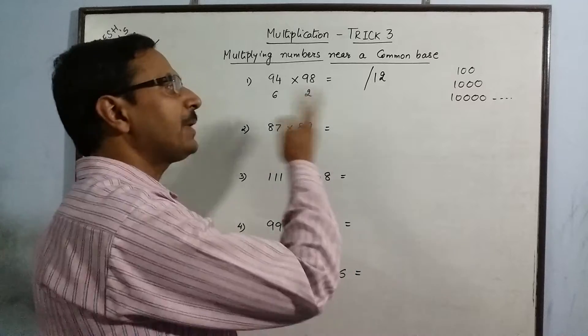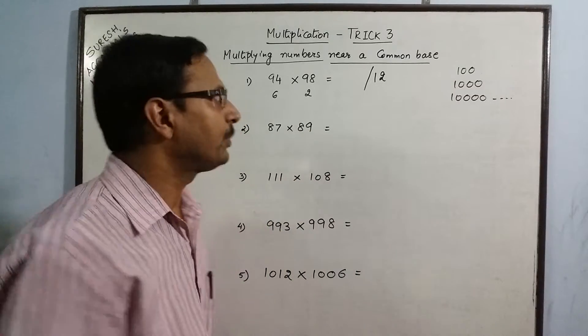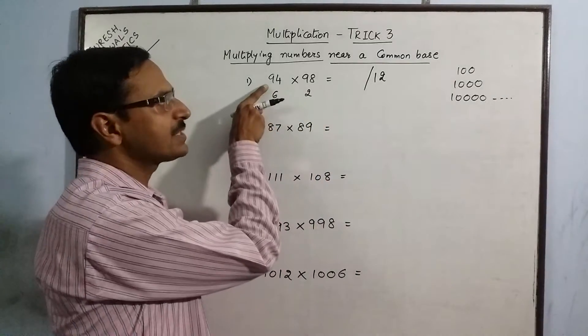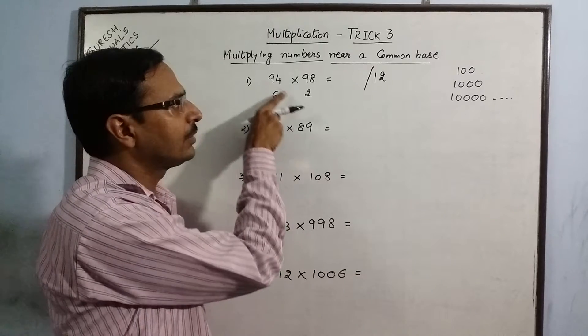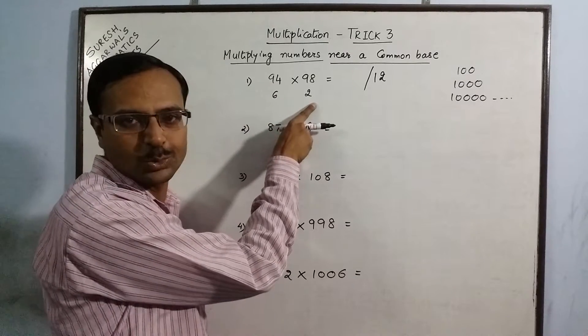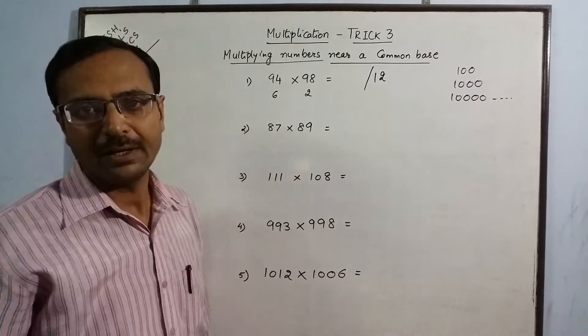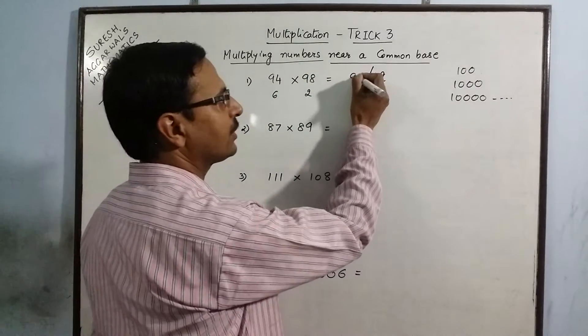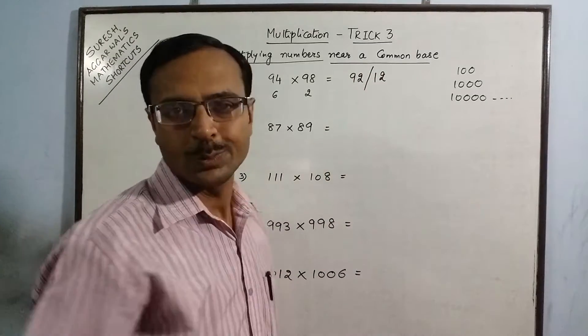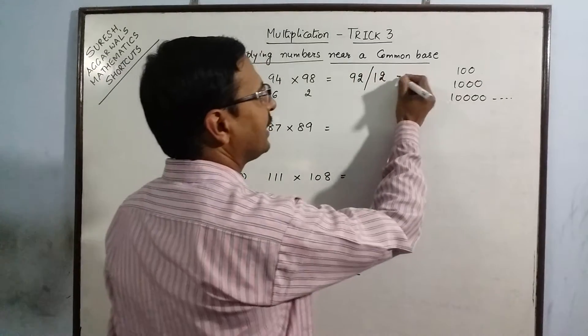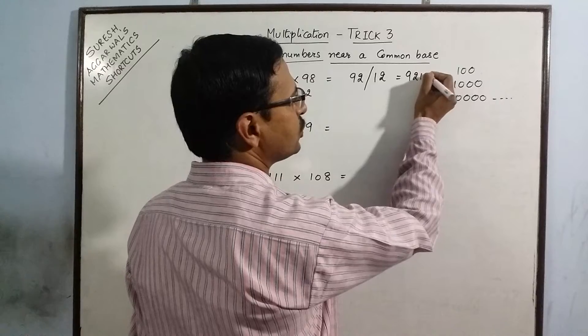The other part of the answer is obtained by either subtracting 94 and 2, that is 92, or 98 and 6, that is again 92. So, the other part of the answer is 92. So, the final answer we obtain is 9212.